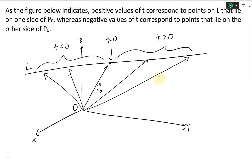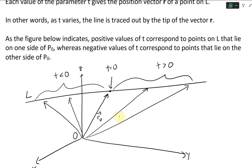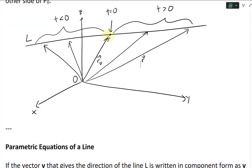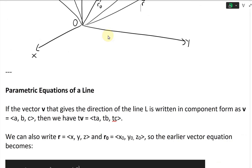So all these values are part of the vector equation r, which fluctuates based on the value of t. And if t is equal to zero, it just becomes r-naught — that starting point.